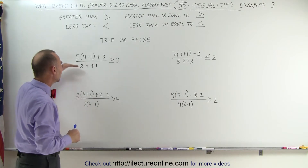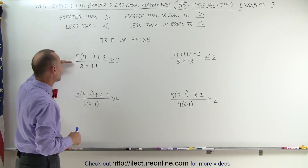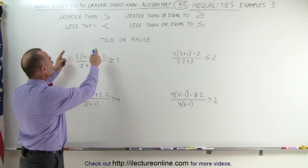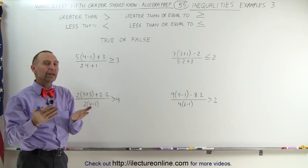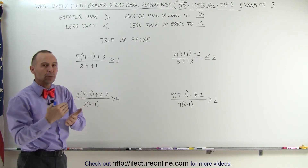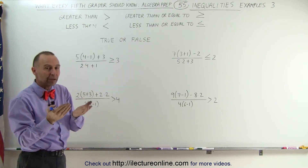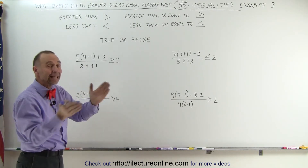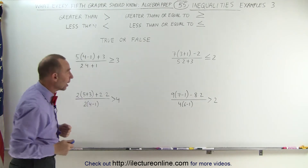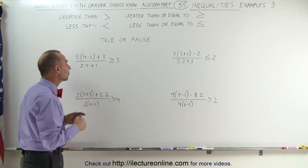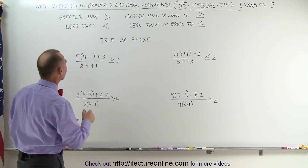In the case of expressions where we have a numerator and a denominator, we want to work out the numerator first, work out the denominator first, and then divide the numerator by the denominator. Let's go ahead and do that.